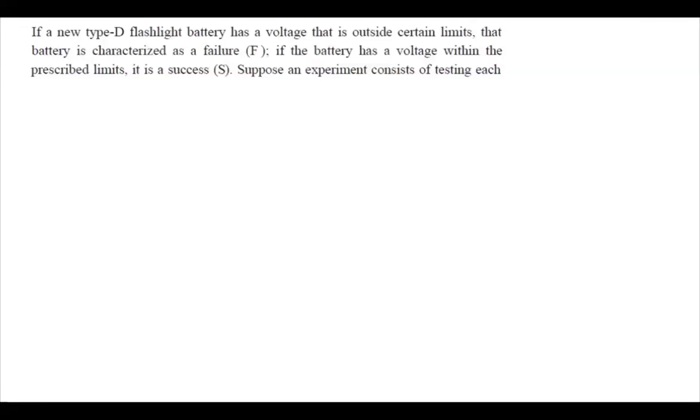If a new type D flashlight battery has a voltage that is outside certain limits, that battery is characterized as failure. If the battery has a voltage within the prescribed limits, it's assumed to be success.